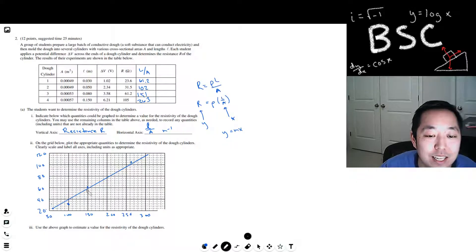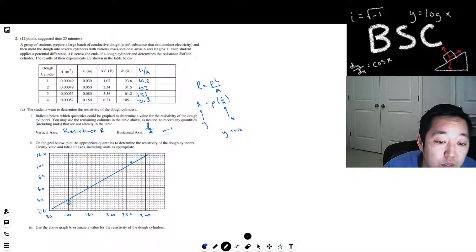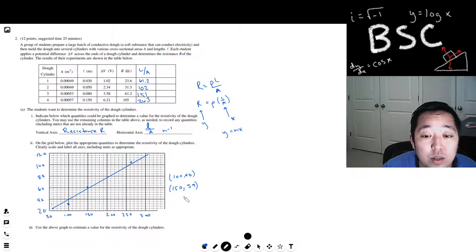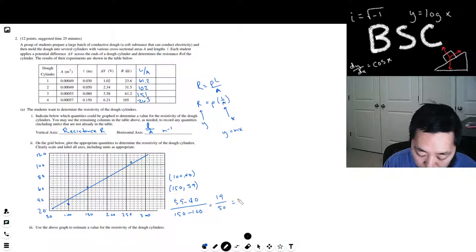Now I just want to get the slope of this line and the slope would give me resistivity. It would be resistance over L over A, so it'll give me the resistivity units. Estimate the value of resistivity. Maybe I just need two points that are pretty good. We'll say there I'm at about 140 for one point. Maybe here I'm at like 150 and that would be 50, maybe 59. We'll say 59. Okay, so then we're going to do 59 minus 40 over 150 minus 100 and that would equal 19 over 50, which is about 0.38.